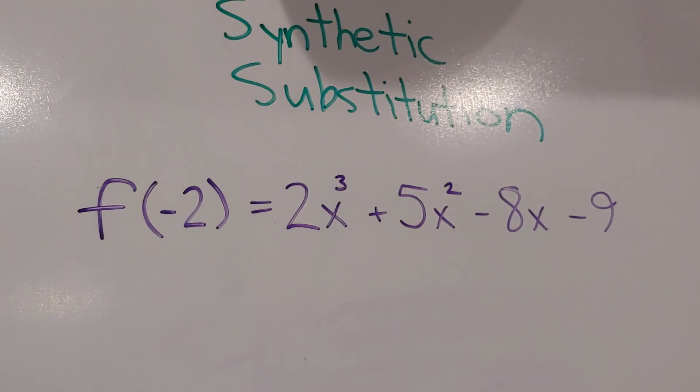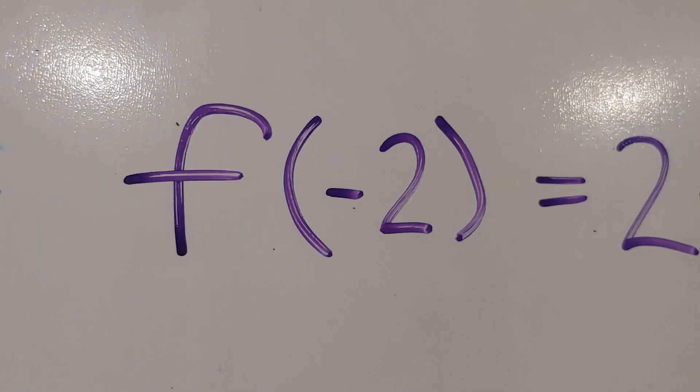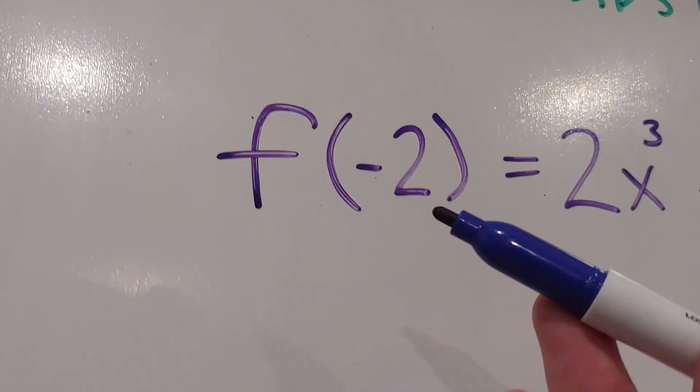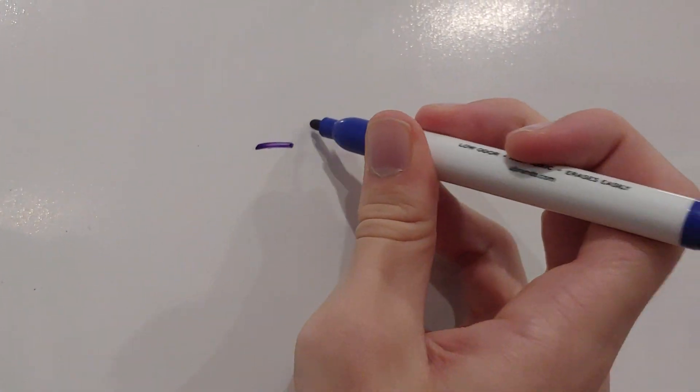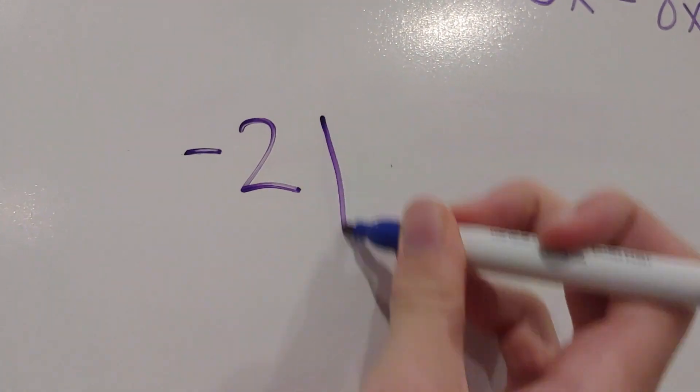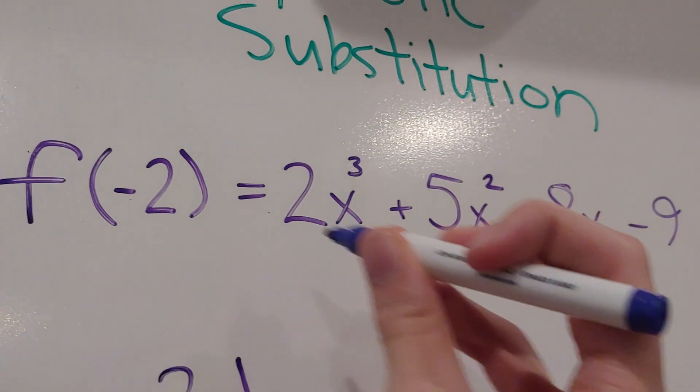Here is how to do synthetic substitution. First, we use the number in the parentheses and place the number right here. Then we draw this box and add these numbers in.